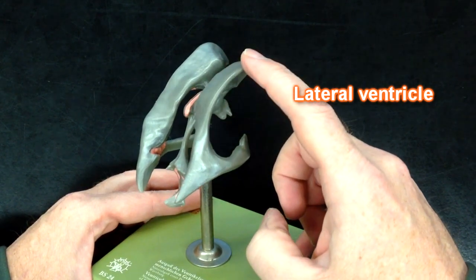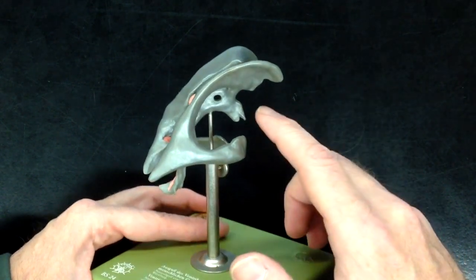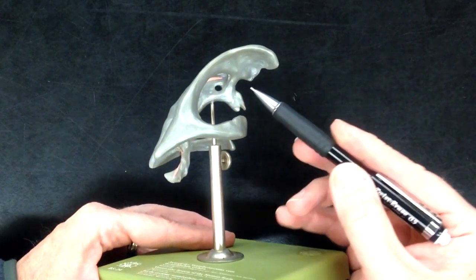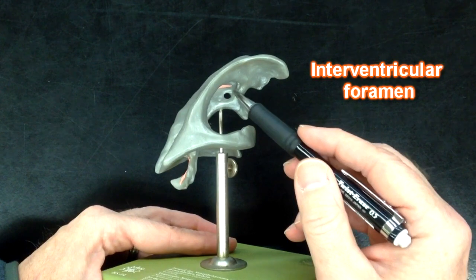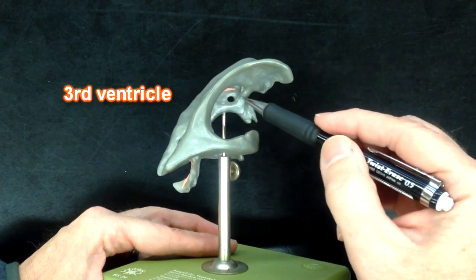The cerebrospinal fluid would flow from the lateral ventricles through this structure right here, which is the interventricular foramen, into the third ventricle, which is here.